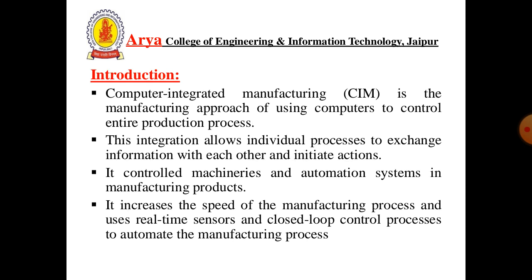Introduction to Computer Integrated Manufacturing, i.e. CIM. These are the key points of CIM. CIM is the manufacturing approach of using computers to control the entire production process. This integration allows individual processes to exchange information with each other and initiate action. It controls machine reach and automation systems in manufacturing products. It increases the speed of the manufacturing process and uses real-time sensors and closed-loop control processes to automate the manufacturing process.